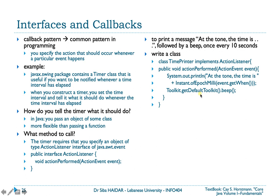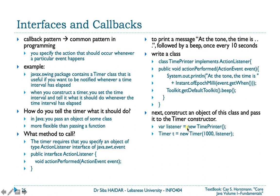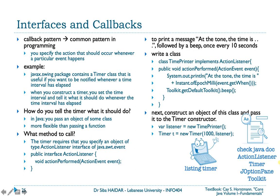You then construct an object of your class — for example: var listener = new TimePrinter() — and pass it to the Timer constructor, specifying the interval of 1000 milliseconds and the listener object. The Timer will then call the actionPerformed method of your listener object every second. We will see how to write this in a more elegant way later.